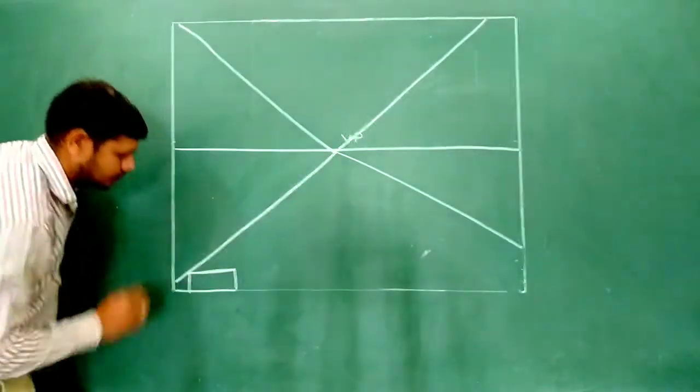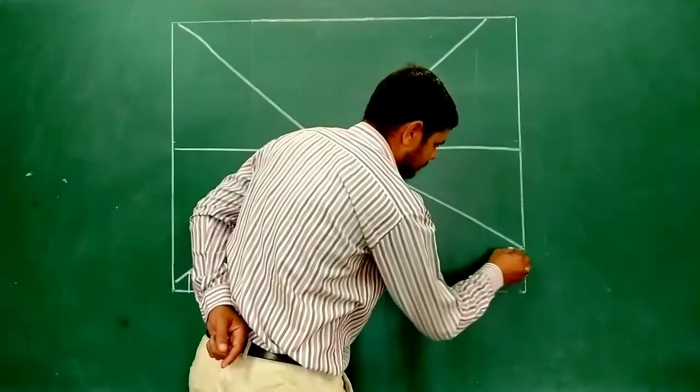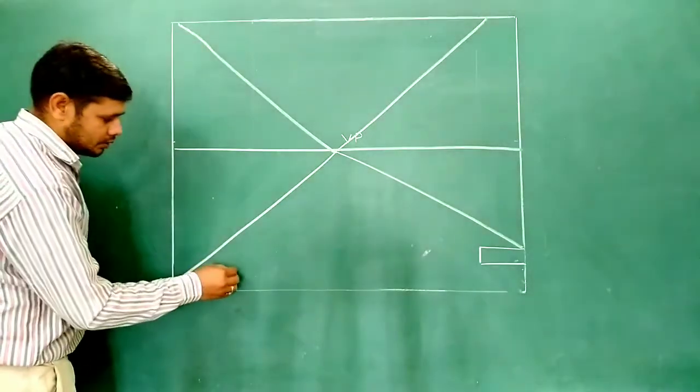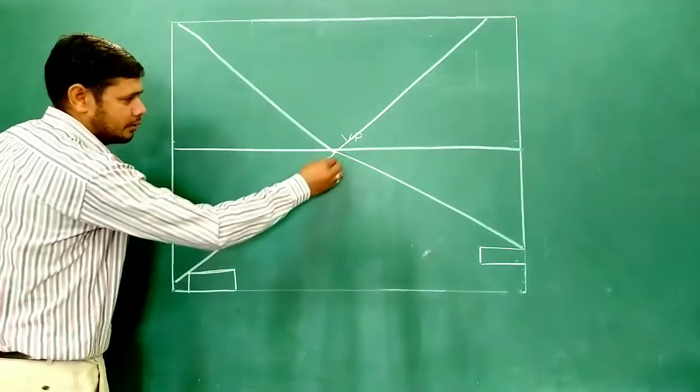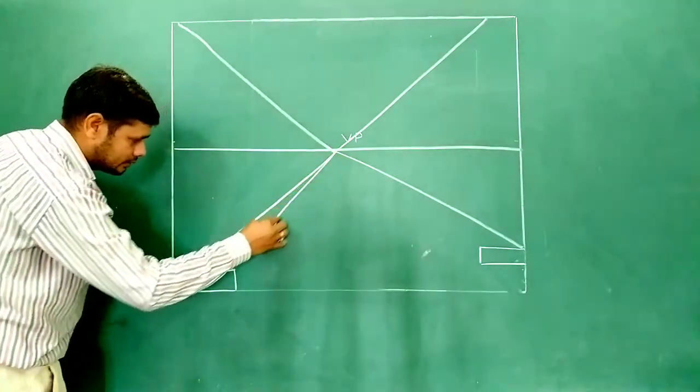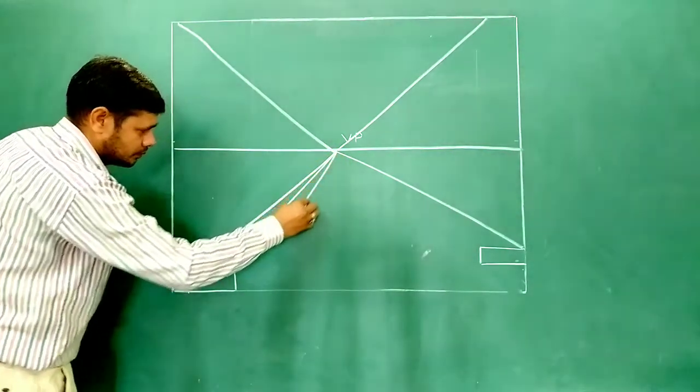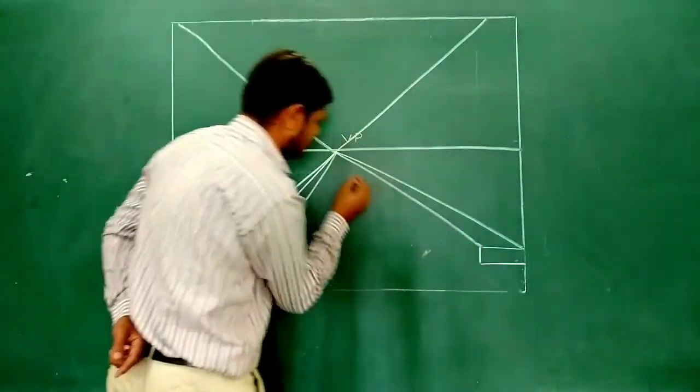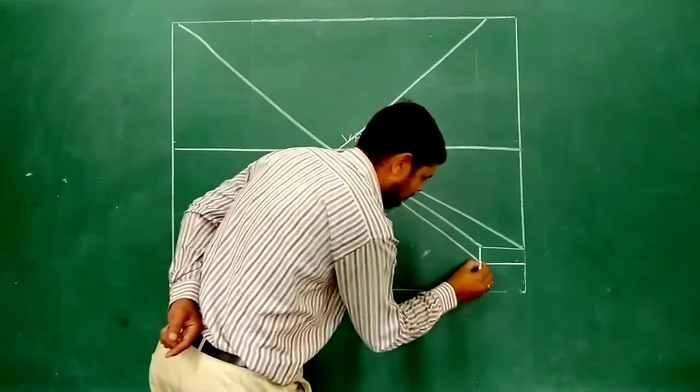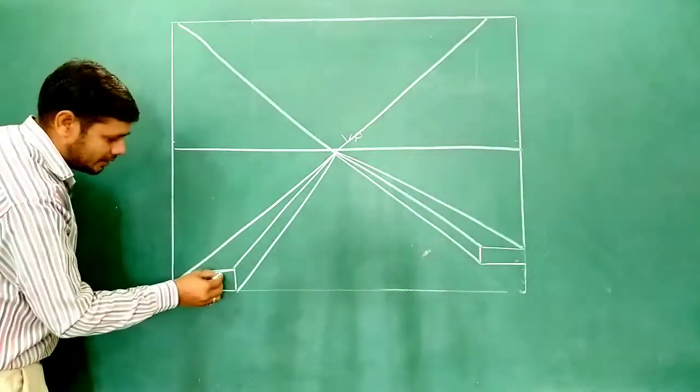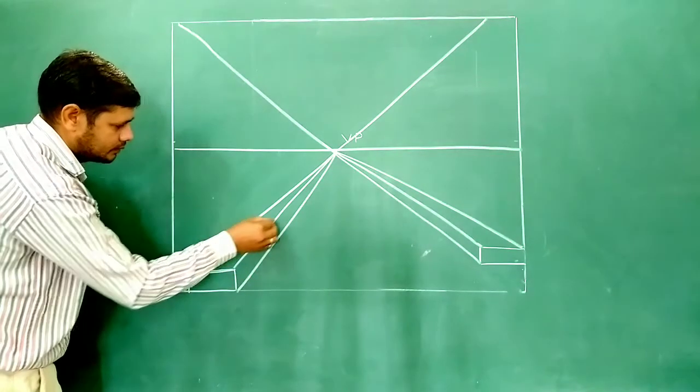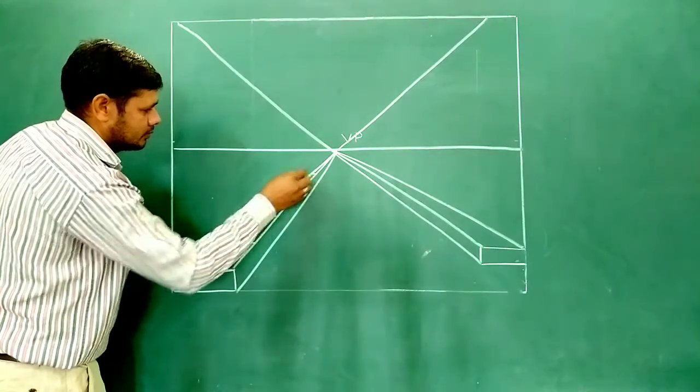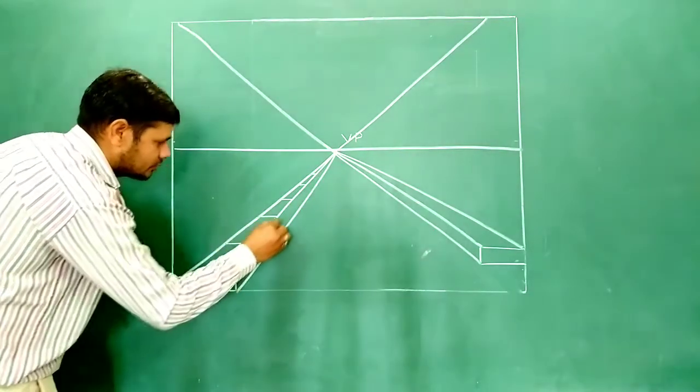And this line parallel to this line, like this. According to distance, the gap is less. And this line is 90 degree straight line. Both sides same, we make a road the same.